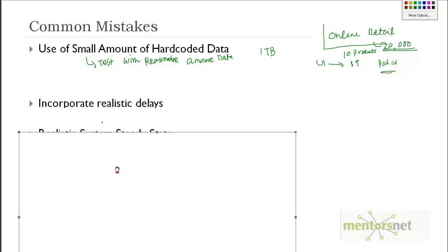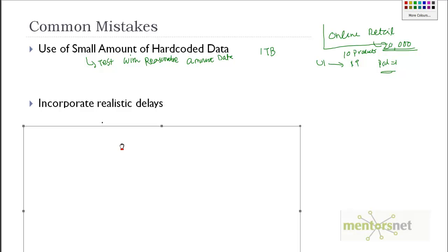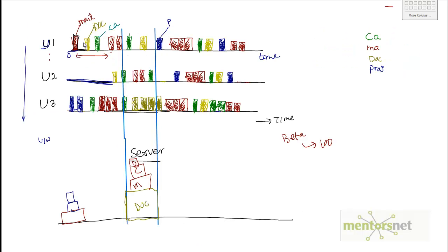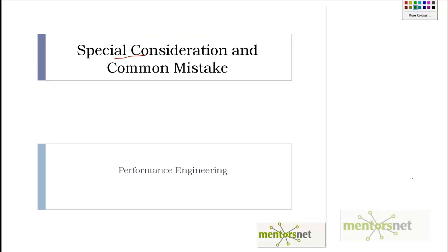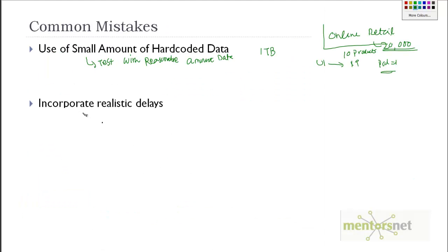In that way, we can figure out the real issues involving data volume. Another common mistake that people generally do: they don't put any realistic delay. What do you mean realistic delay? Let's talk about this distribution. In this activity distribution, user one is checking the mail and after that, he's just waiting - reading that mail - not doing any activity. That inactive period in performance engineering is called think time or delay.